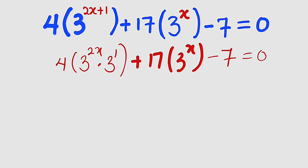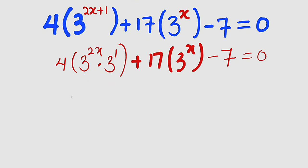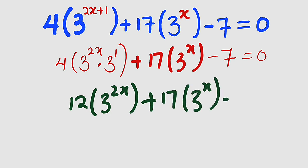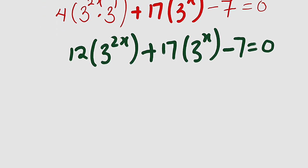If you multiply this together, you're going to obtain 4 times 3 which is 12, then multiplied by 3 to the power of 2x, then plus 17 multiplied by 3 to the power of x minus 7, the whole of this equal to 0.